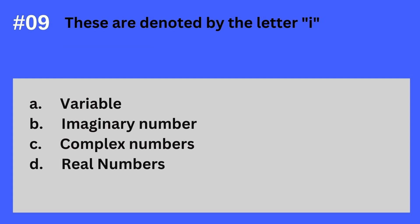Question 9. These are denoted by the letter I. A. Variable. B. Imaginary number. C. Complex numbers. D. Real numbers. The answer? It's B. Imaginary numbers. These are denoted by the letter I — Imaginary numbers.